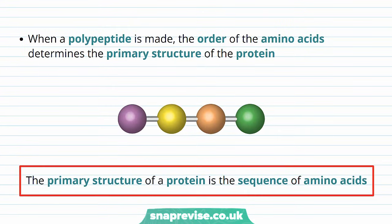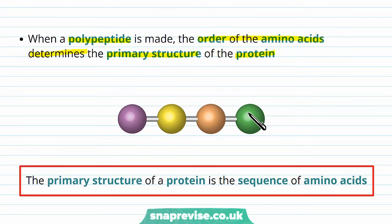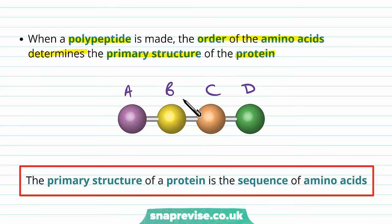When a polypeptide gets made — a long chain of linked amino acids — the order of the amino acids determines the primary structure of the protein. For example, purple followed by yellow, orange, and green, each representing a different amino acid, gives it a particular sequence that the polypeptide is designed to have. By definition, the primary structure of a protein is the entire sequence, or order, of amino acids.